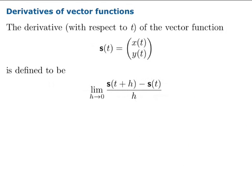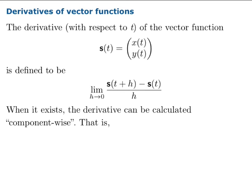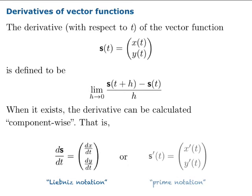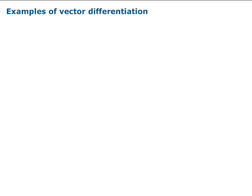We're ready for our definition. Given the vector function s(t) with component functions x(t) and y(t), the derivative with respect to t is defined to be this limit. When that limit exists, the derivative can be calculated component-wise. We simply take the derivative inside the column, so to speak, each function individually. This is good news because it means that when we take the derivative of these vector functions, we're really using old-fashioned technology.